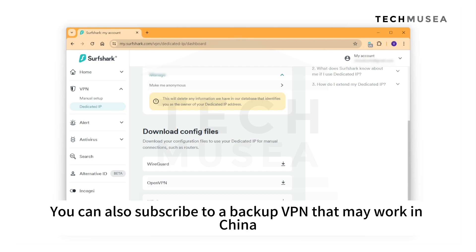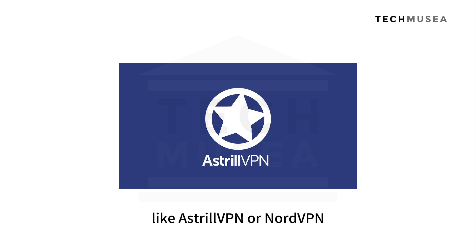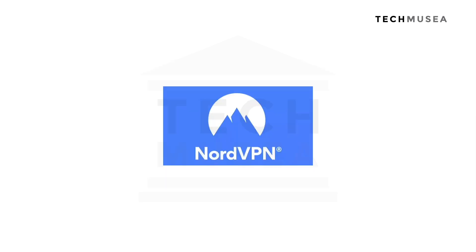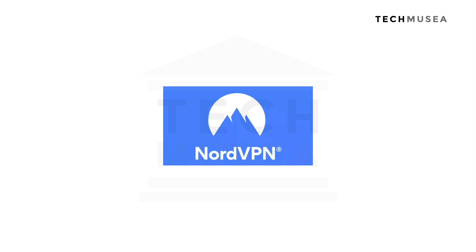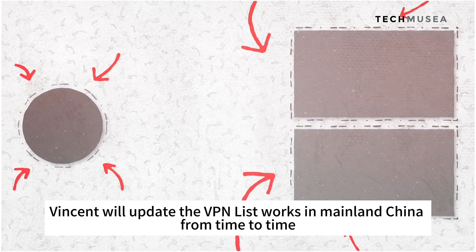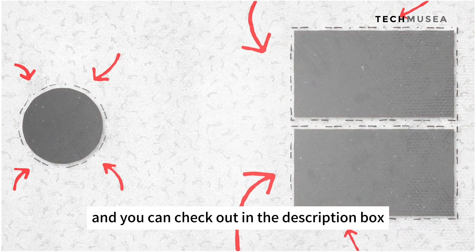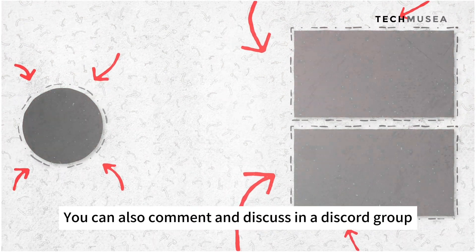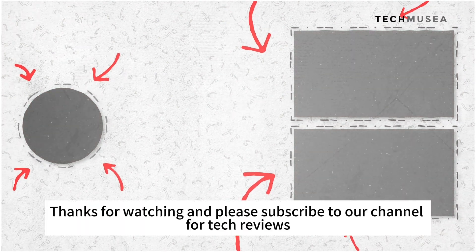You can also subscribe to a backup VPN that may work in China as well, like AstroVPN or NordVPN. The recommended ones are run by famous brands. Vincent will update the VPN list that works in mainland China from time to time, and you can check it out in the description box below. You can also comment and discuss in the group.